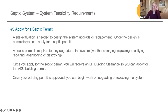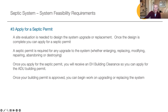Once the septic design is completed, you can apply for a septic permit. A septic permit is required for all upgrades and modifications to the system. Once the design is accepted, you will receive a building clearance that will allow you to apply for the ADU building permit. This is when you can safely begin designing your ADU. Once your building permit for the ADU is approved, you can begin work on upgrading or replacing the existing septic system — but not before the ADU permit is approved.